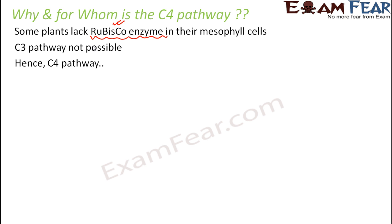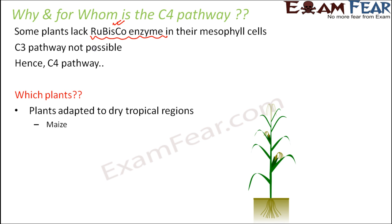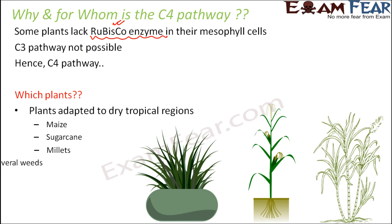So which plants lack Rubisco in their mesophyll cells and require the C4 pathway? Mostly these are plants adapted to dry tropical conditions, and mostly monocotyledonous plants are C4 plants. Examples of C4 plants include maize, sugar cane, millets, and several weeds. In the mesophyll cells of these plants, the C3 cycle cannot happen, and therefore the C4 pathway takes place.